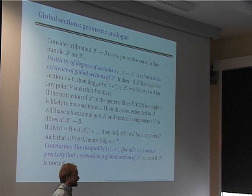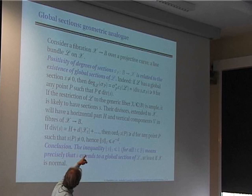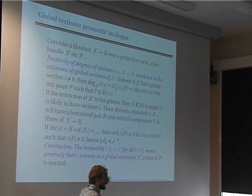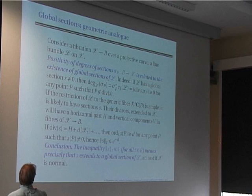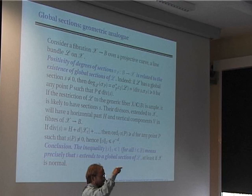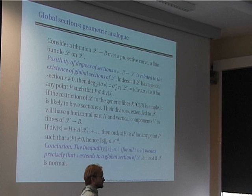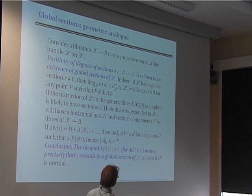If I have a global section S which does not vanish identically, and which does not vanish at the point P, then to compute the degree of sigma_P with respect to L I can use the divisor of this section. Since the section sigma_P is not contained in this divisor, the degree is computed by local intersection multiplicities, which are non-negative because the cycles are in good position, and so you get the fact that the height is non-negative.